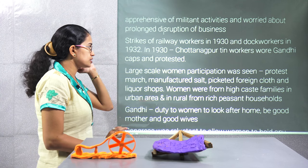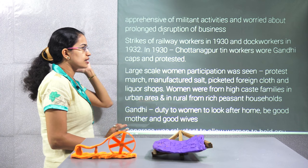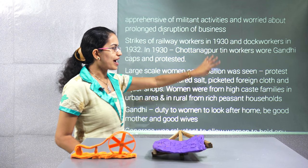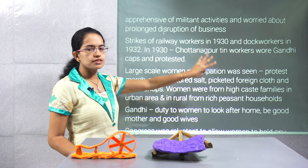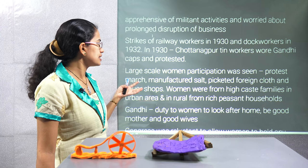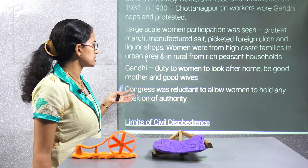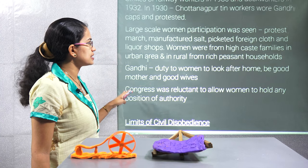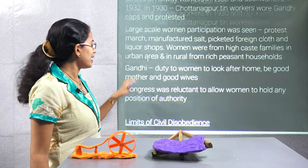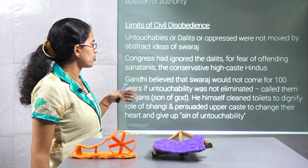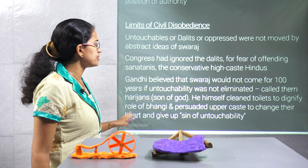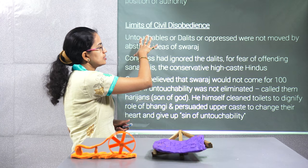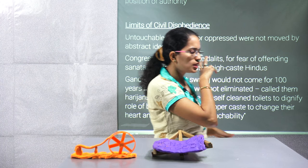There were strikes among railway workers, dock workers, factory workers, and tin workers. They were wearing Gandhi caps and protesting. Large-scale protest was commonly seen. But again, there were certain limits observed under the civil disobedience movement.